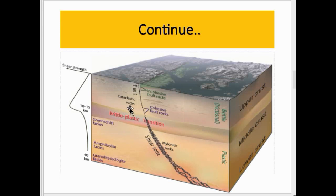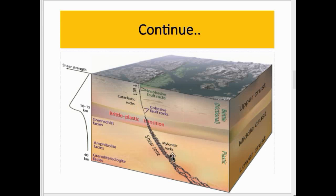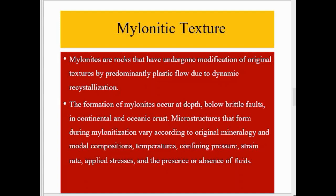Mylonite forms due to ductile and brittle deformations, as well as cataclastic flow and fracturing. Cataclastic flow involves the granulation, crushing, or milling of the original rock, followed by rigid body rotations and translation of mineral grains or aggregates before lithification. This zone is highly crushed due to the fault and shear zones, and this process is responsible for the formation of mylonite rock.